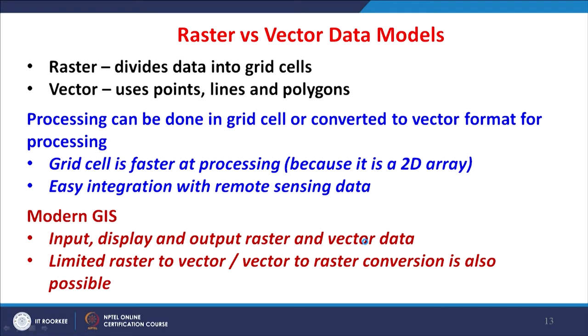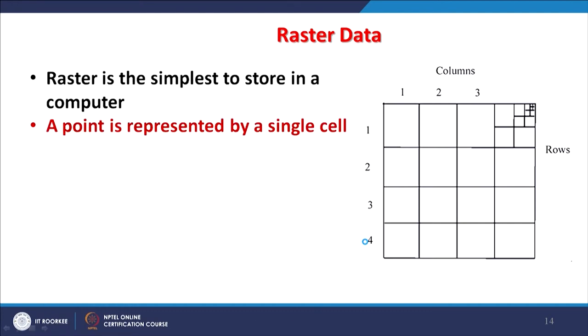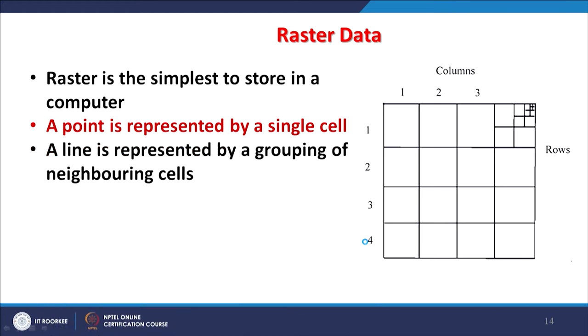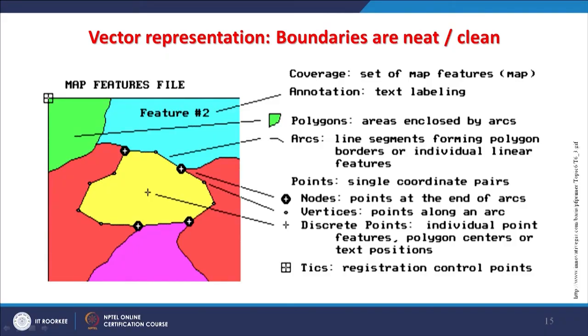Raster is the simplest to store in a computer. A point is represented by a single cell, a line by a group of neighboring cells. Data is set up as rows and columns, and each cell or pixel is assigned a value. High spatial resolution — smaller cells representing smaller ground areas — will require more storage space and more processing time.